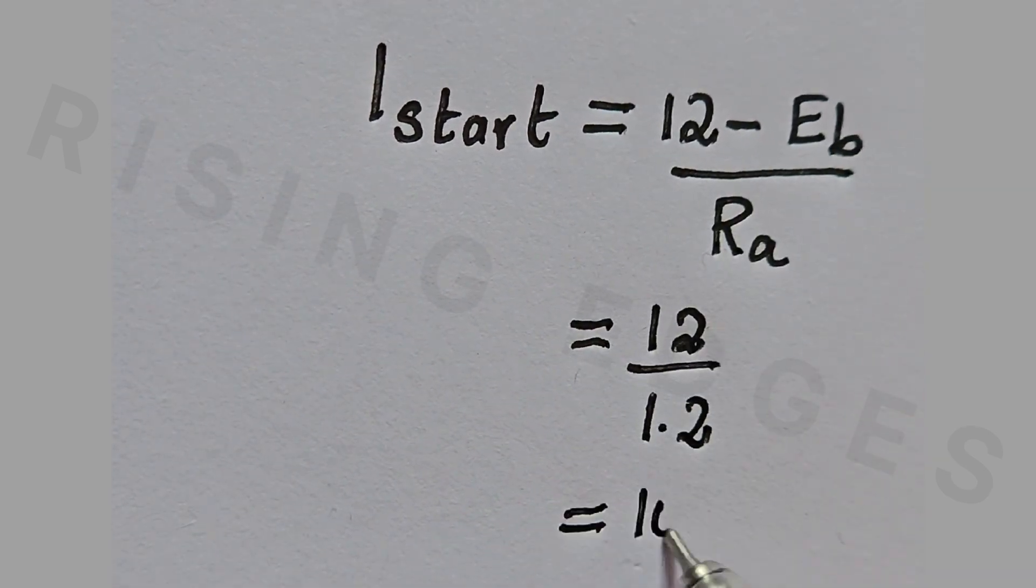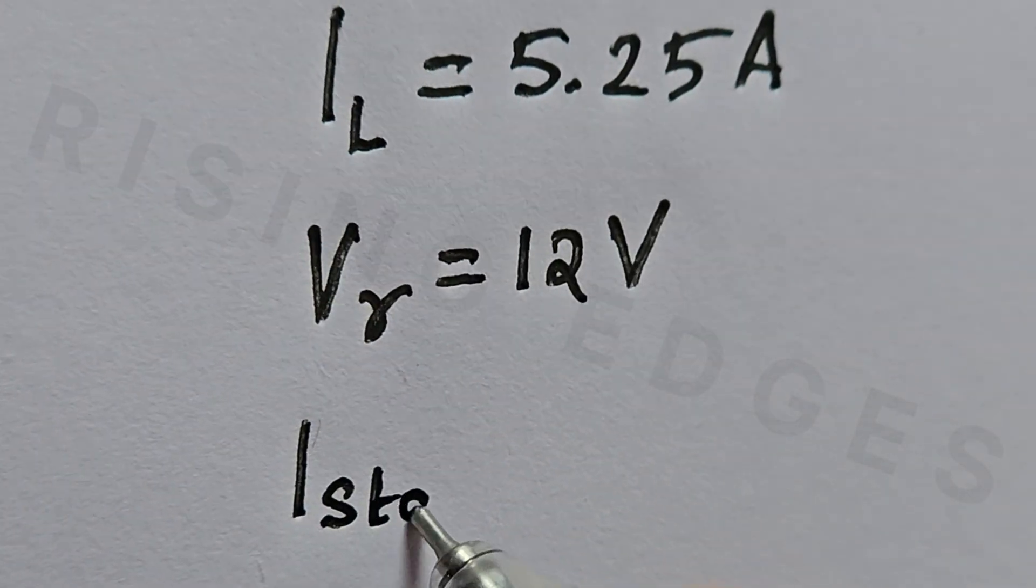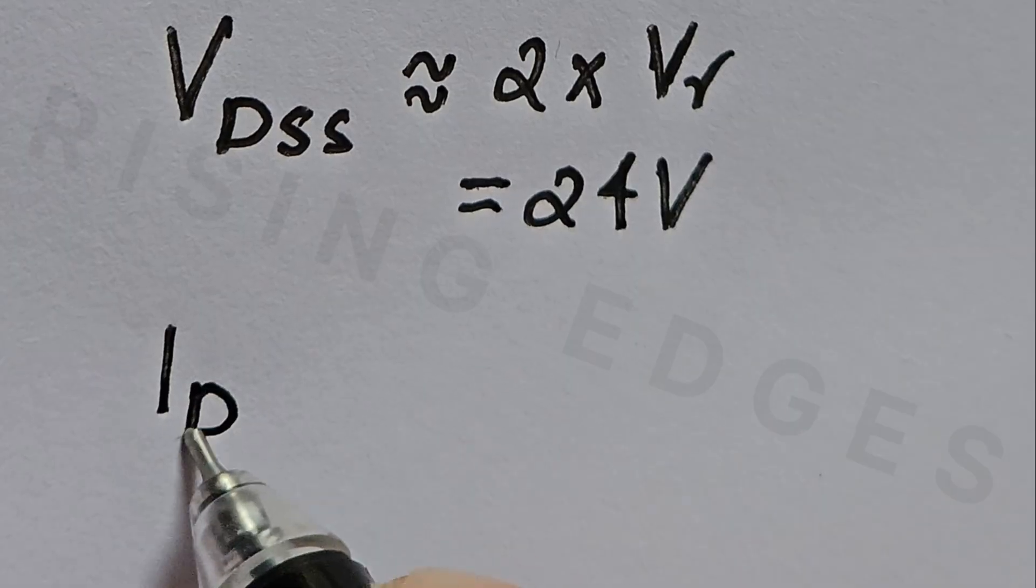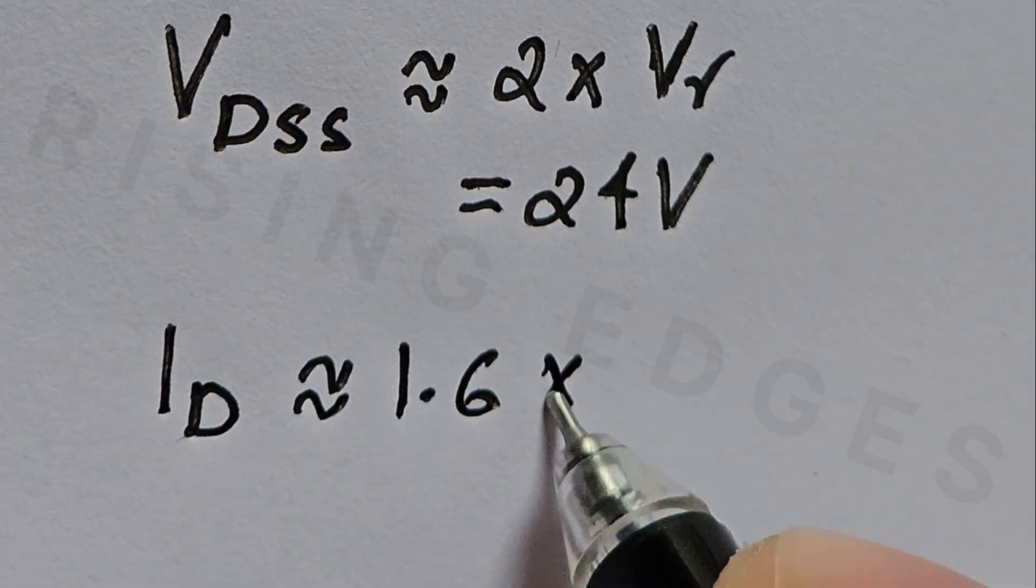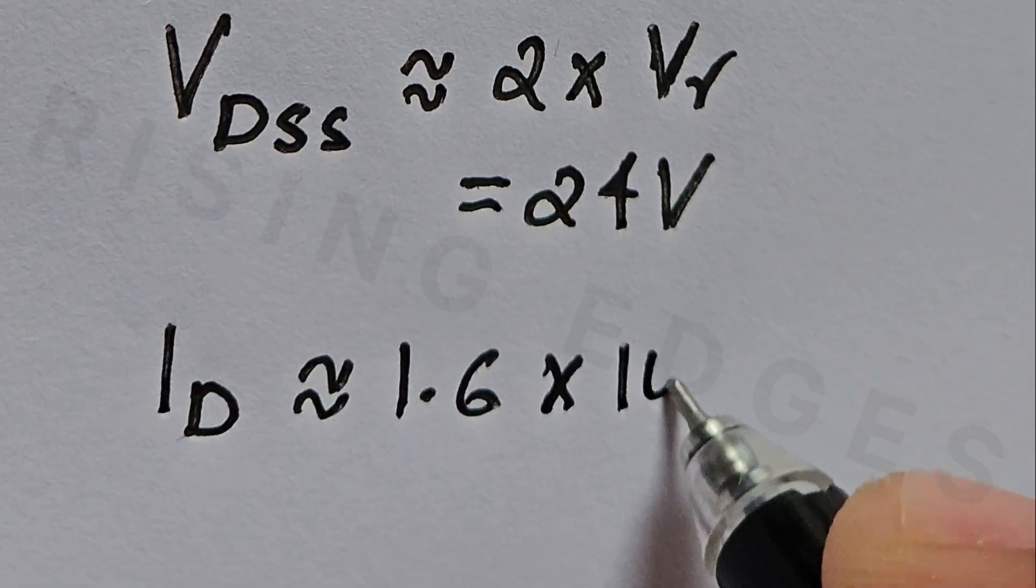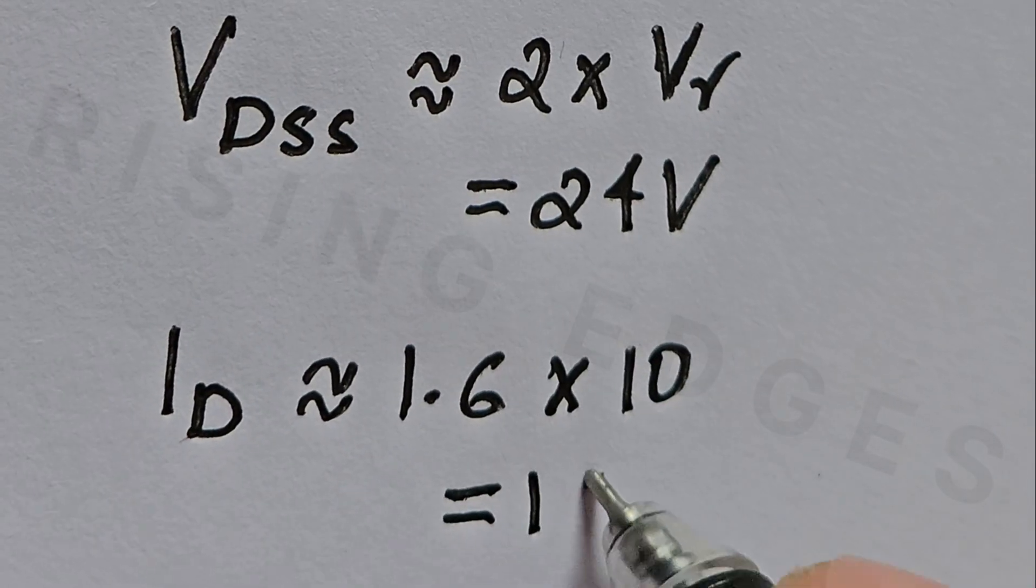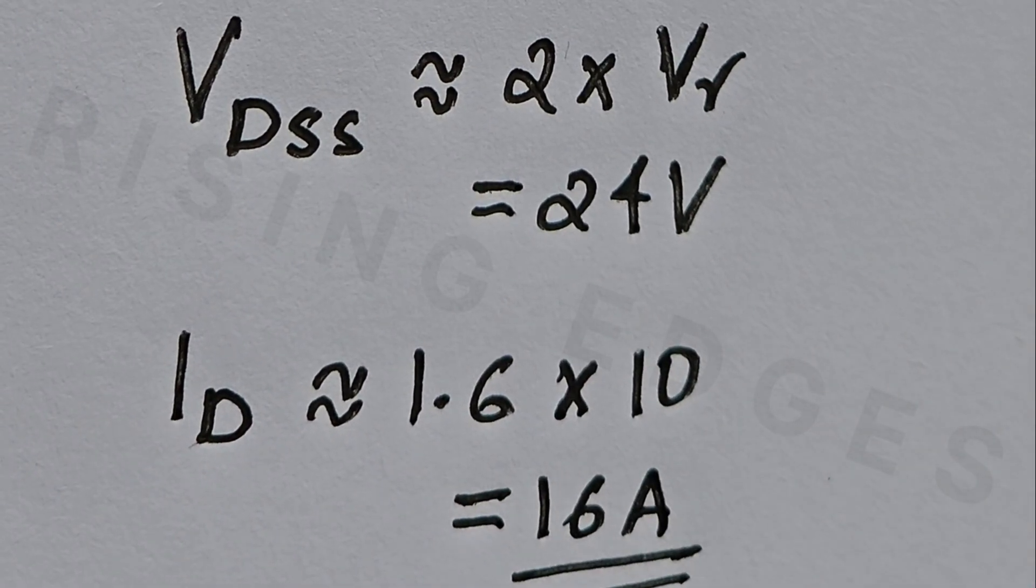To ensure reliability, I usually apply a safety factor of 1.6x current and around 2x voltage. So we are looking for a MOSFET rated at least 24V 16A. That gives us a solid starting point.